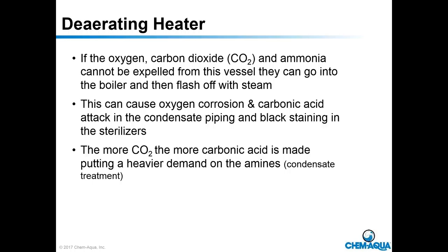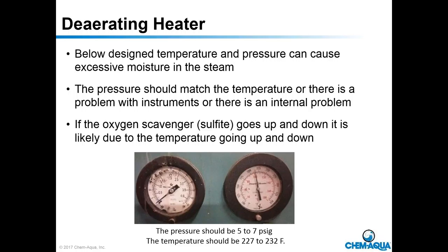When you can't neutralize all the amines and still meet FDA guidelines, you must go to a dealkalizer or an RO — reverse osmosis — unit to reduce the total alkalinity of the water. Be sure deaerators are operating at the correct pressure and temperature. Be sure the gauges match each other using the steam chart. If not, it typically indicates the gauges are wrong or there's an internal problem — replace the gauges first and see how it goes. If you see the sulfite or oxygen scavenger levels going up and down in the water, the deaerator temperature may be fluctuating.